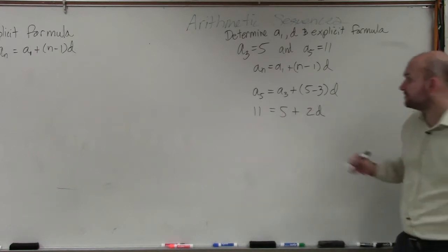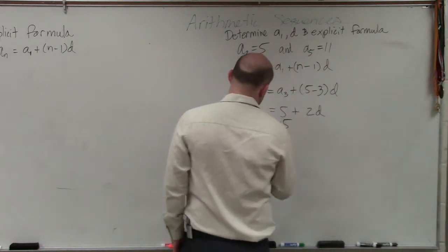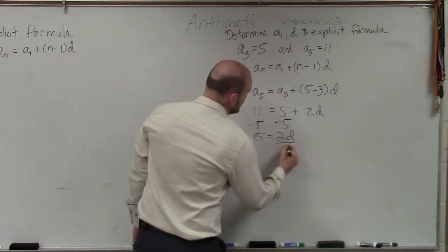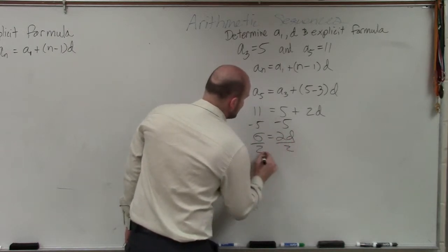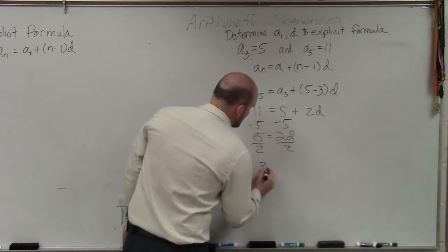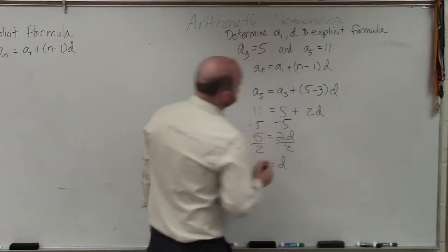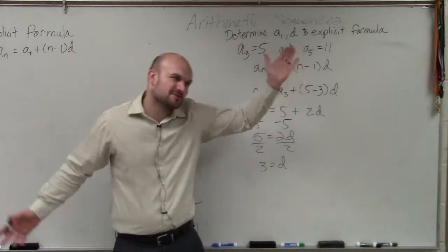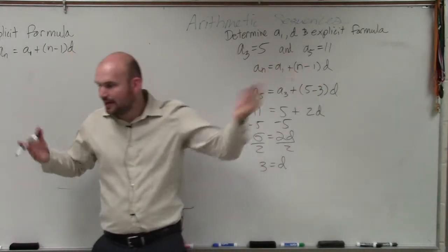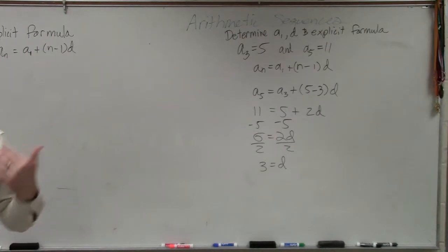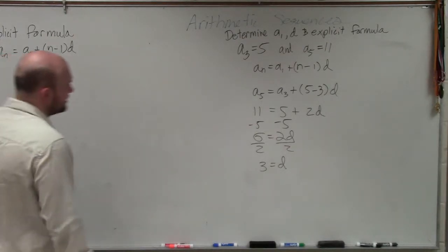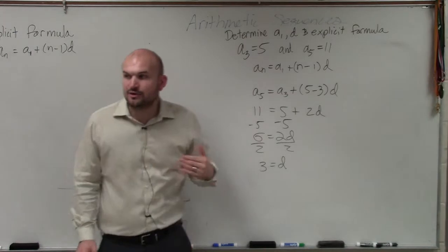What I'm simply going to do is solve. Subtract 5 from both sides: 6 equals 2D. Divide by 2: 3 equals D. As I mentioned, you could have subtracted those and divided by 2 before. However, I just want to go through using this process because this is something you can constantly go ahead and use.